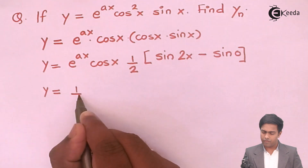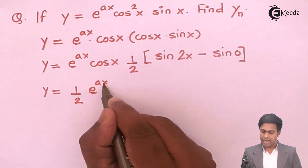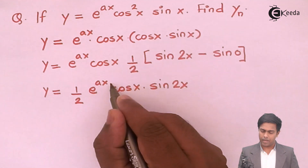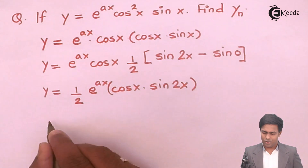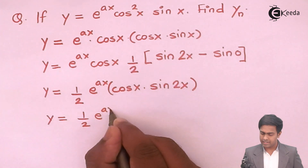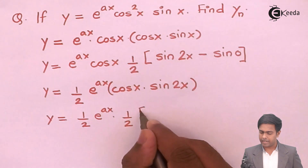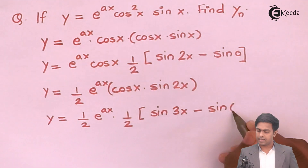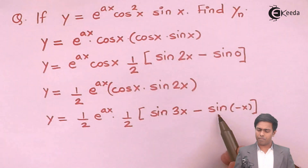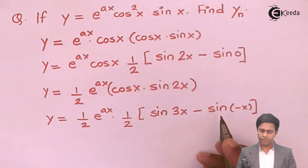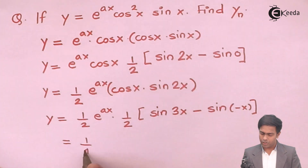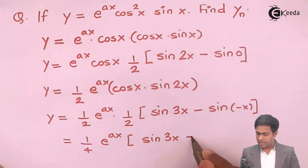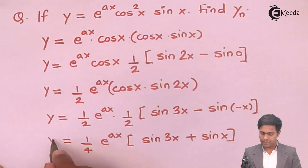Now apply the defactorization formula again to cos x · sin 2x: this gives ½(sin(2x+x) − sin(2x−x)) = ½(sin 3x − sin(−x)). Since sin(−θ) = −sin θ, the minus sign comes out and becomes positive, giving ½(sin 3x + sin x). So y = ¼ e^(ax)(sin 3x + sin x).